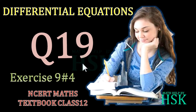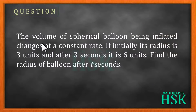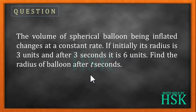In this video I'm going to take question number 19 of exercise 9.4 from the chapter on differential equations of the NCERT maths textbook of class 12. The question is: the volume of a spherical balloon being inflated changes at a constant rate. Initially its radius is 3 units and after 3 seconds it is 6 units. We have to find the radius of the balloon after t seconds.